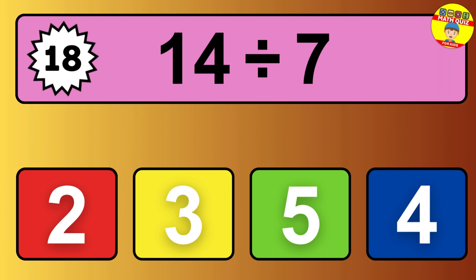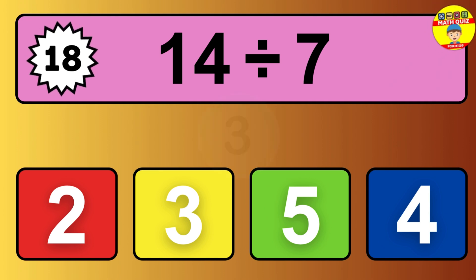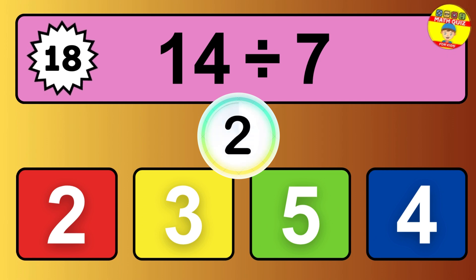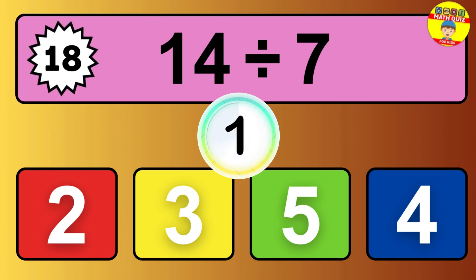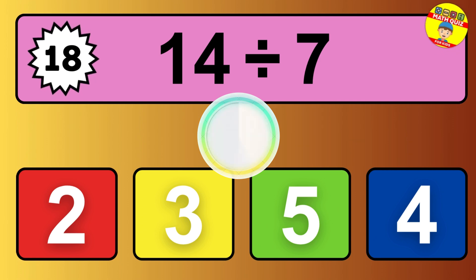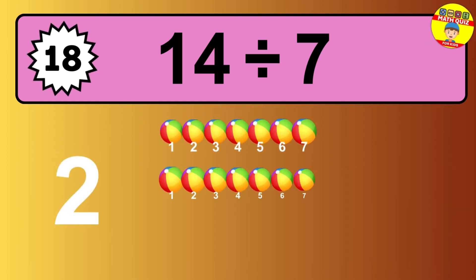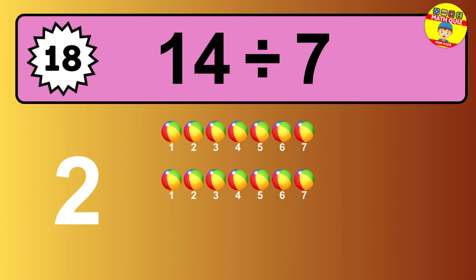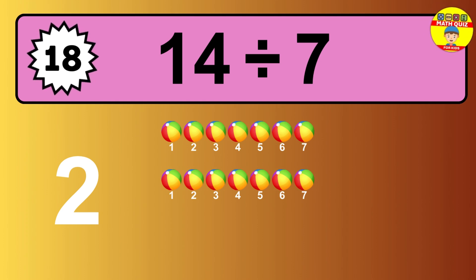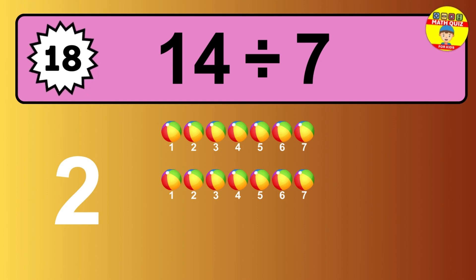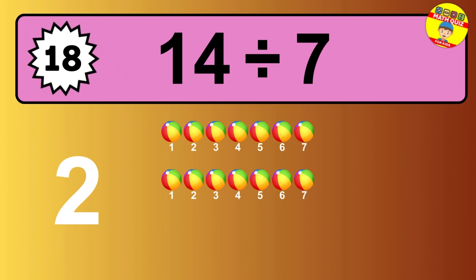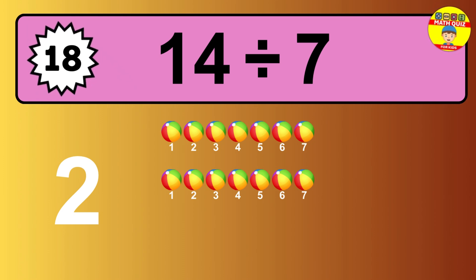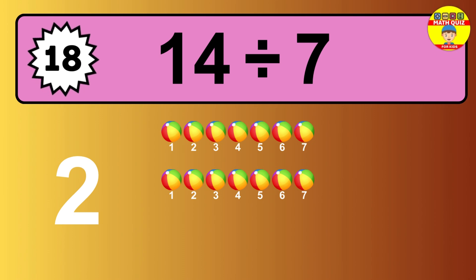14 divided by 7 — time to think. Let's go to the solution. Divide the number 14 by 7. Each group contains 7 units, so dividing 14 by 7 results in 2 equal groups. Thus, the result is 14 divided by 7 equals 2.